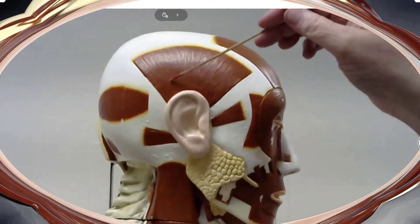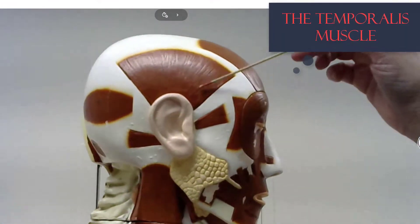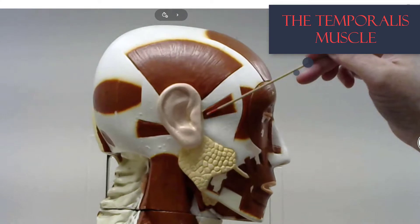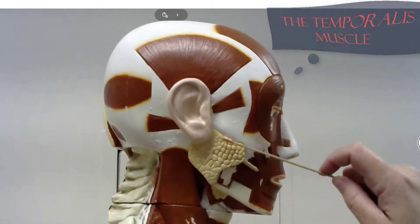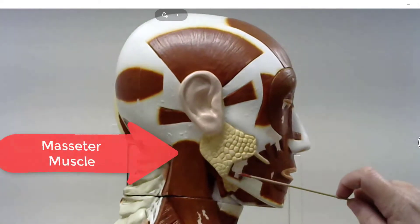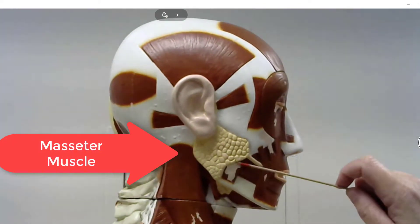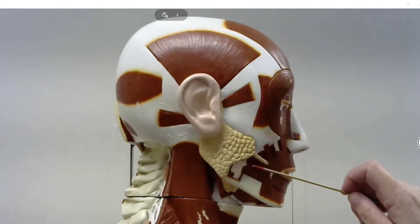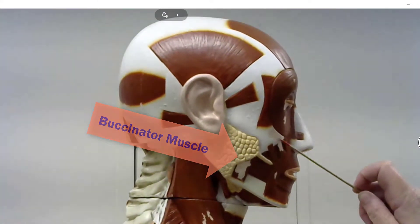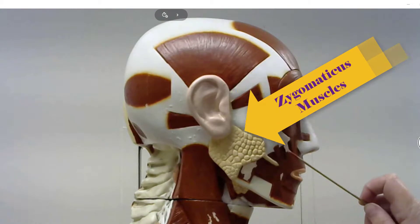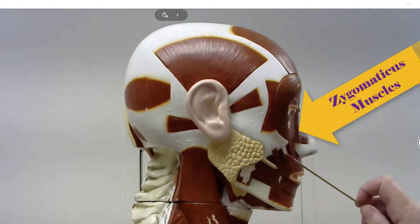On this model, this is the temporalis muscle, and this is also the temporalis muscle underneath this pad of fat. This area here would be the masseter. This is the buccinator, and this is the major and minor zygomaticus muscles.